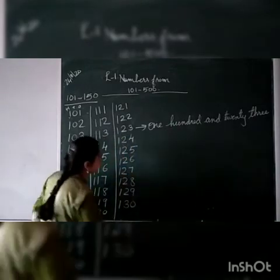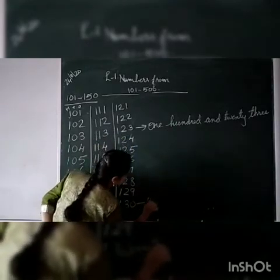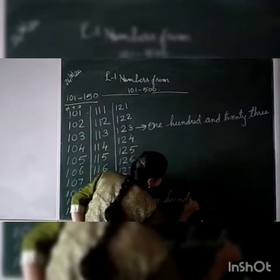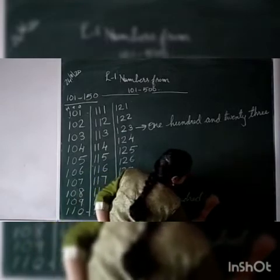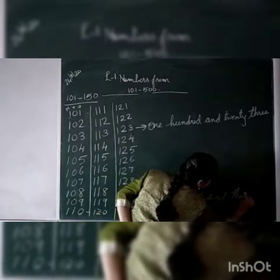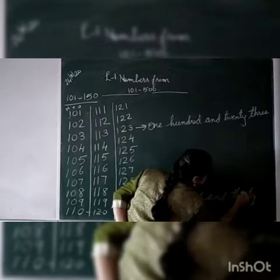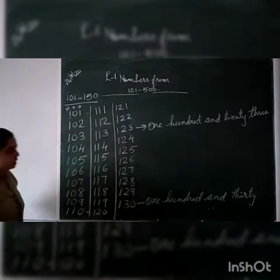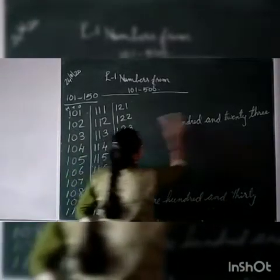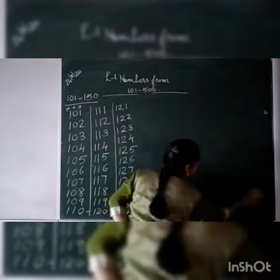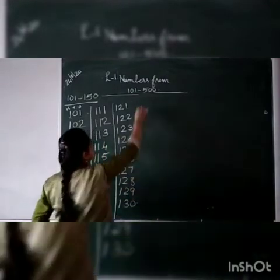Then how to write 130? One 100, and 30. What is the spelling of 30? T-H-I-R-T-Y. 130. Now we can see after 130. Which number will come? After 130. What comes the number? 130, 131.